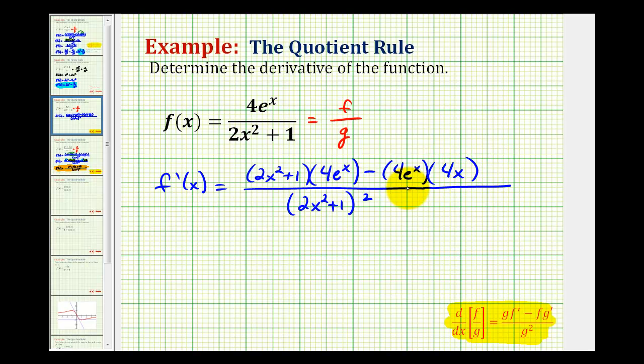So now we have the derivative function. It's a matter of performing algebra to simplify this as much as possible. We'll leave our denominator in factored form. Now we'll distribute here so we'll have eight x squared e to the x plus four e to the x and here we're going to have minus sixteen x e to the x.